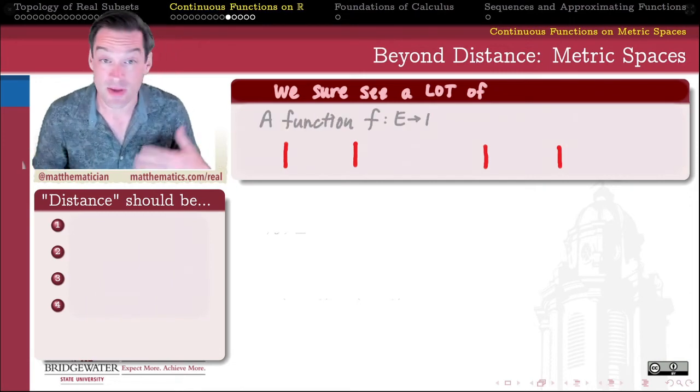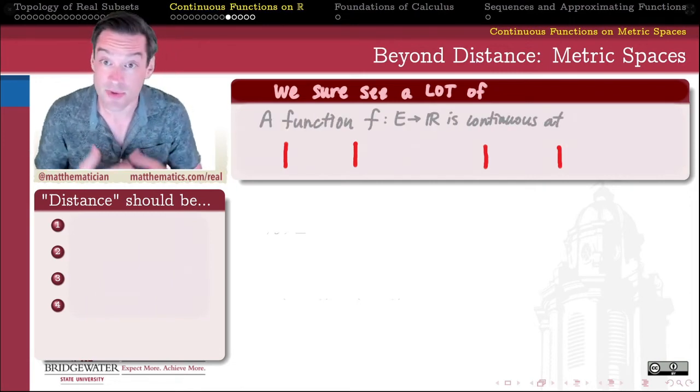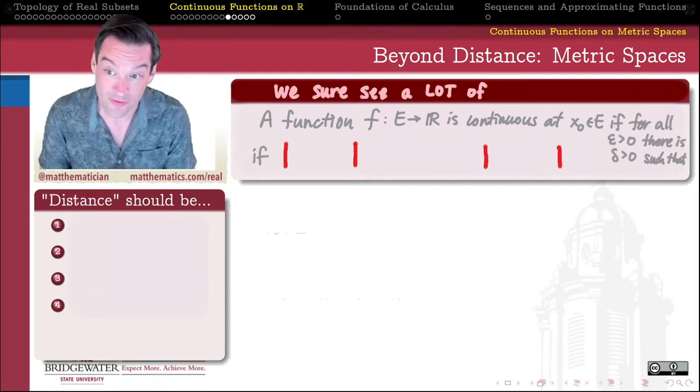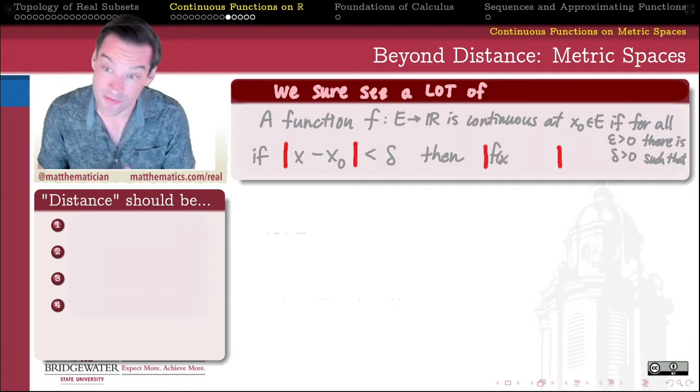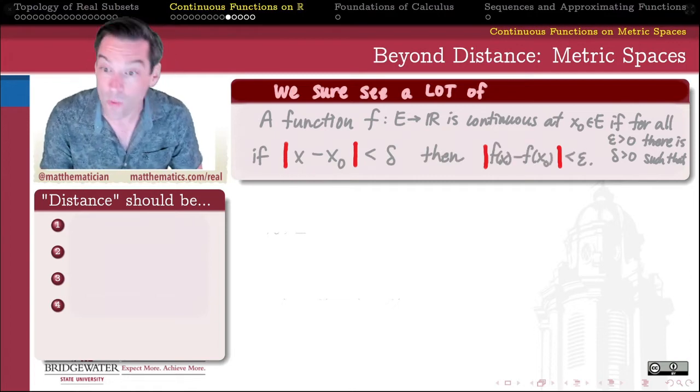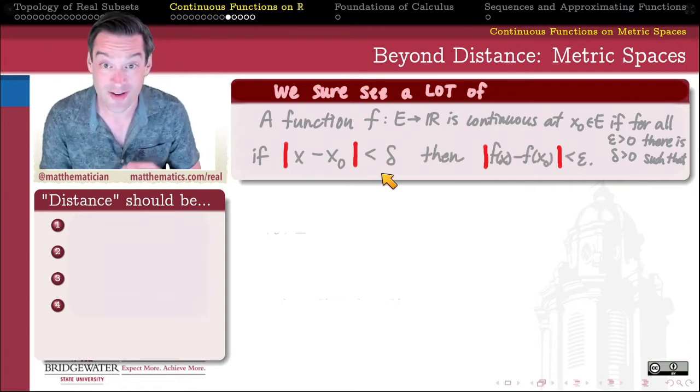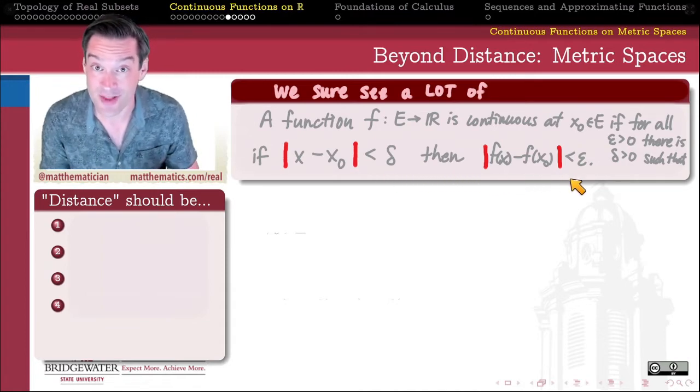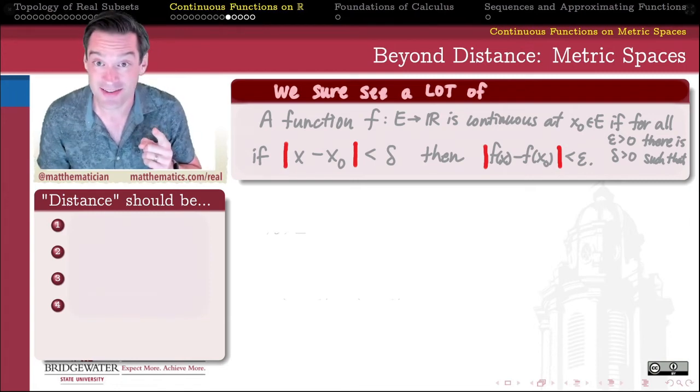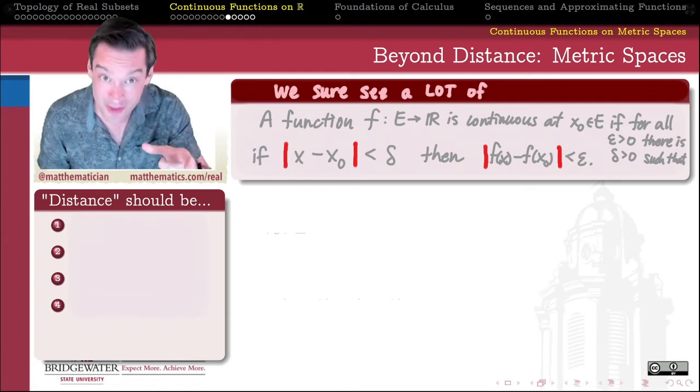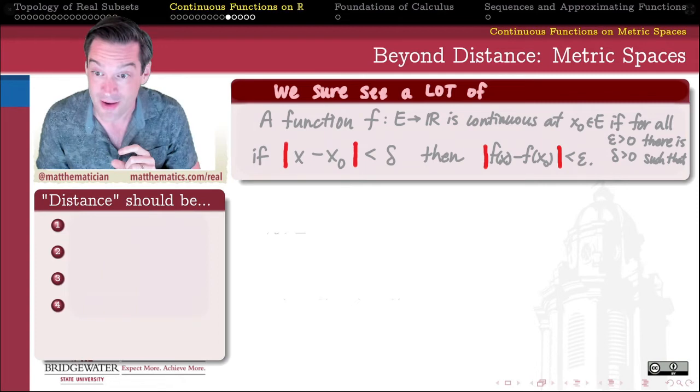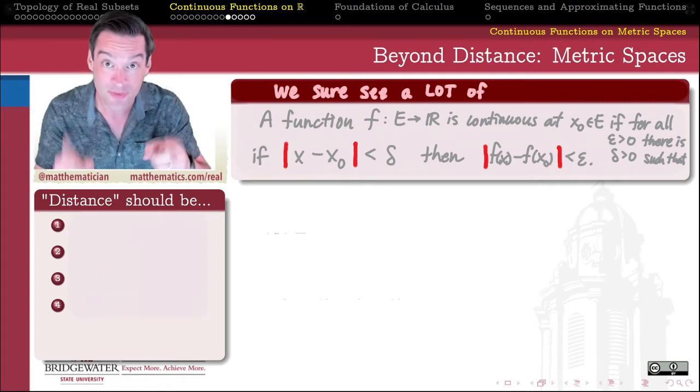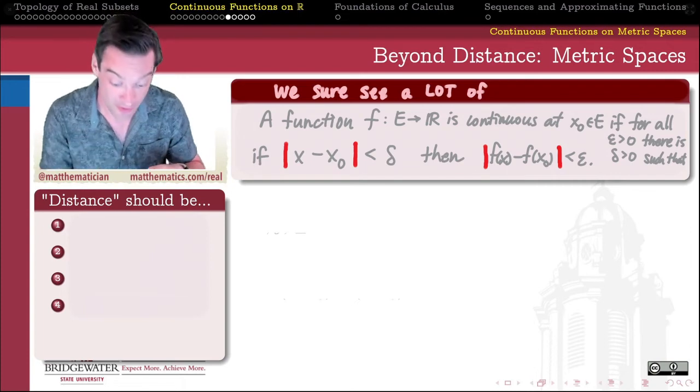As just one example, think about the definition of what it means for a function to be continuous. A function is said to be continuous at a point x₀ if for every ε that's positive there is a δ that's positive such that whenever the distance between x and x₀ is less than δ, then the distance between f(x) and f(x₀) is less than ε. I just use the word distance almost unconsciously because this is the way that I think when I'm doing analysis. But if we just look at this without going a layer deeper, what we see are absolute values of differences of real numbers.